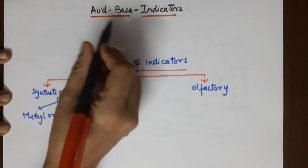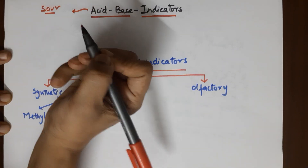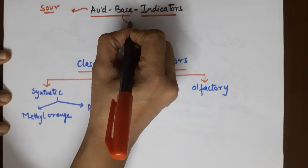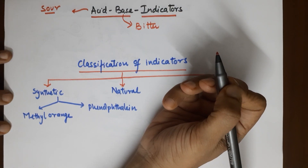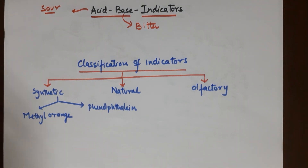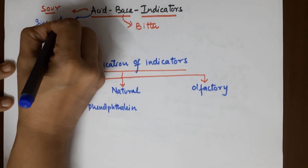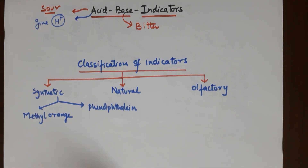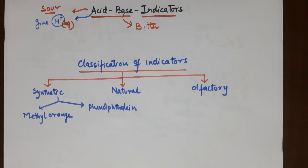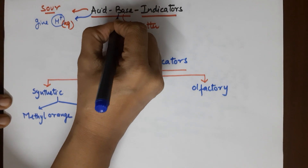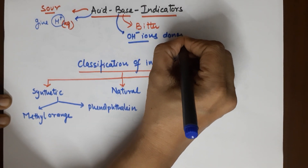Before moving on to indicators, we need to understand what acids and bases are. According to Class 8, anything sour in taste is an acid and anything bitter in taste is a base. But for Class 10, acids are substances that give H⁺ ions — and H⁺ ions are only released in aqueous medium. Similarly, bases are substances that give OH⁻ ions.